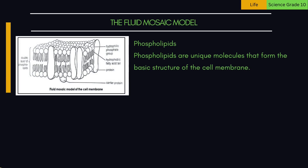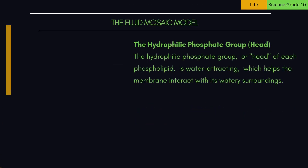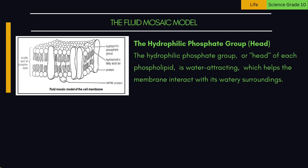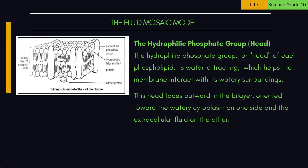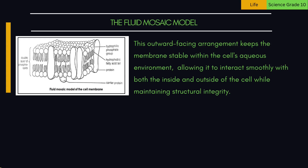1. Phospholipids — unique molecules that form the basic structure of the cell membrane. Each phospholipid has two distinct parts: the hydrophilic phosphate group head, which is attracted to water, and two hydrophobic fatty acid tails that repel water. The hydrophilic head is water-attracting and faces outward in the bilayer, oriented toward the watery cytoplasm on one side and the extracellular fluid on the other. This outward-facing arrangement keeps the membrane stable within the cell's aqueous environment, allowing it to interact smoothly with both the inside and outside of the cell while maintaining structural integrity.